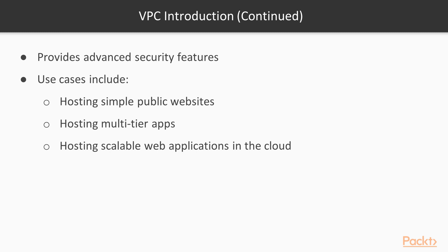VPCs provide advanced security features, for example security groups and network access control lists, to enable inbound and outbound filtering at the instance level and the subnet level. Some use cases for using a VPC include hosting simple public websites, hosting multi-tier applications — for example, you want traffic from the internet to be routed into your web server, but you don't want your databases or application servers to be accessible via the internet. You want those to be accessible only via private connections.